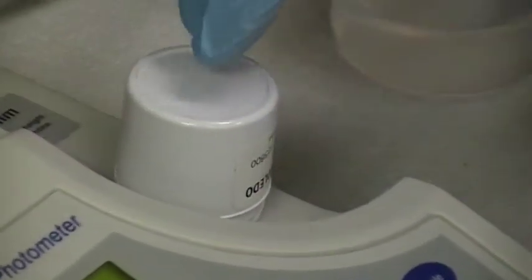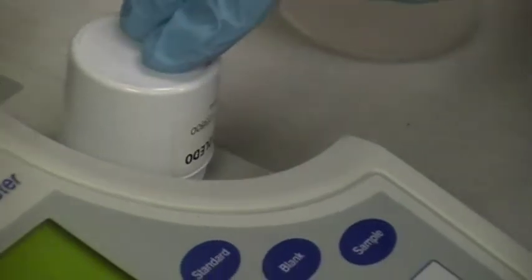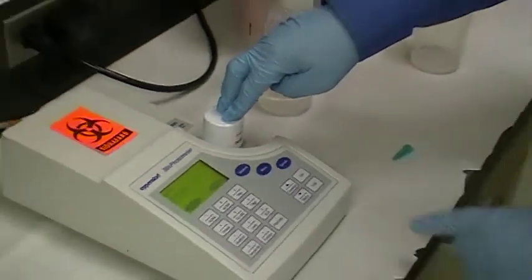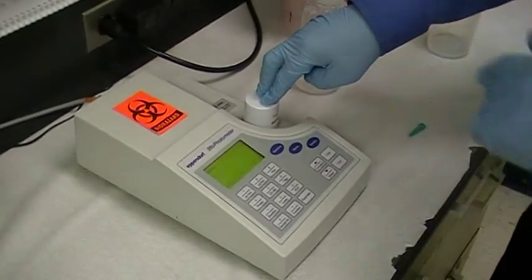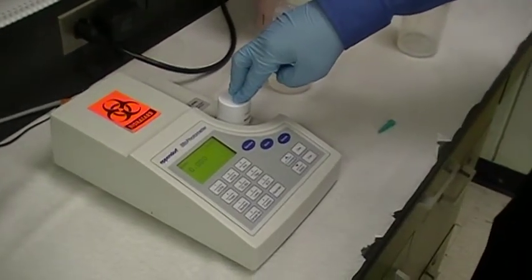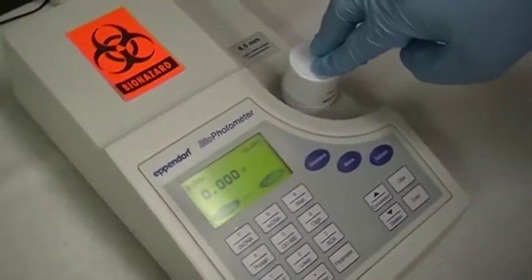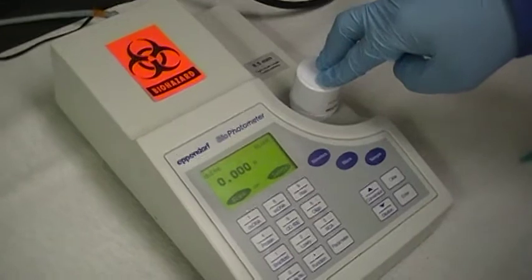So, you put some water in here or whatever your blank is and you stick it in here and then you cover it up with this lid right here. Now, the lid is not very tight so you have to push down on it. Now, before you read your DNA, you press blank. And it's going to read 0.000.